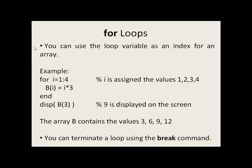We can use the loop variable as an index for an array to access the various elements in the array. For example, we can say i equals 1:4, so i will take on the values 1, 2, 3, then 4. When i is 1, we say the first element of b will equal 1 times 3, or 3. We come to the end, go back up to the top, i now has 2, so b(2) will equal 2 times 3, or 6. When i is 3, the third element of b will equal 3 times 3, which is 9. Then i takes on 4, so the fourth element equals 4 times 3. What is stored in b is 3, 6, 9, and 12. So if we display the third element of b, 9 will be displayed on the screen.